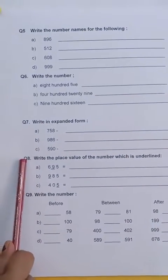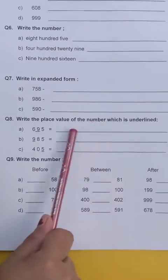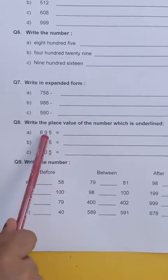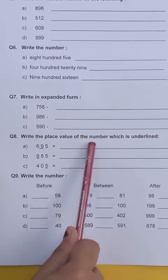Then coming to question number 8. You have to write the place value of the numbers which are underlined. That means 9 is underlined here. So you will write 90 or 9.